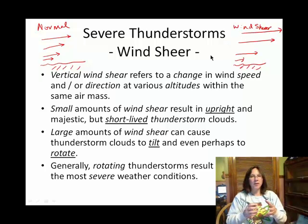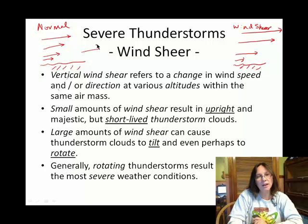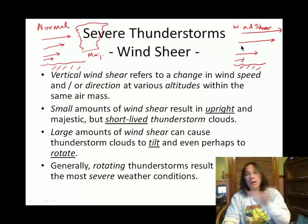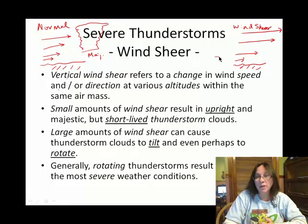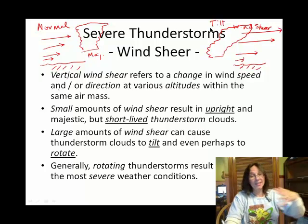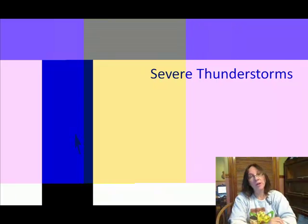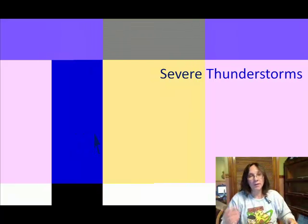If you have a cumulonimbus cloud developing under normal conditions, it will develop kind of majestically and go straight up. But where you have a fair bit of wind shear — fast-moving air as you go up vertically — you're going to get a tilted cloud. It's that tilt that makes meteorologists and weather chasers wonder whether that cell is going to produce severe thunderstorm conditions.